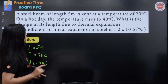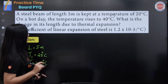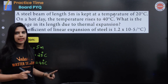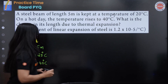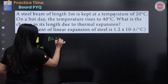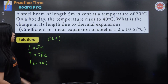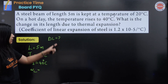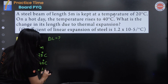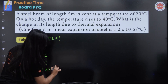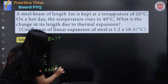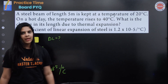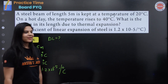What is the change in length due to thermal expansion? The change in length is equal to delta L. The coefficient of linear expansion of steel is 1.2 into 10 to the power minus 5 per degree Celsius.